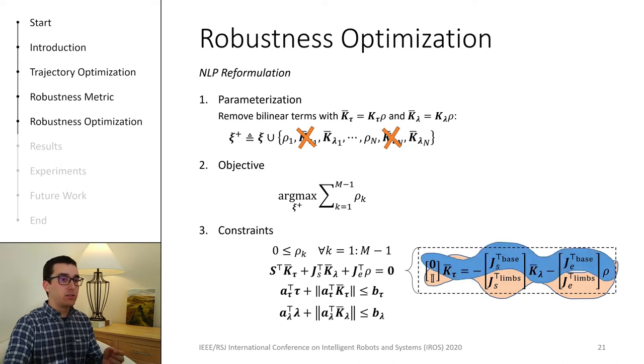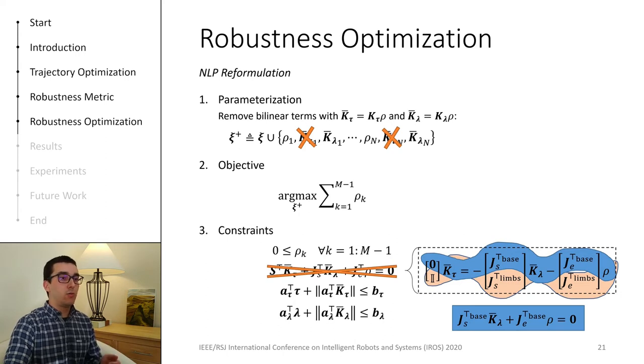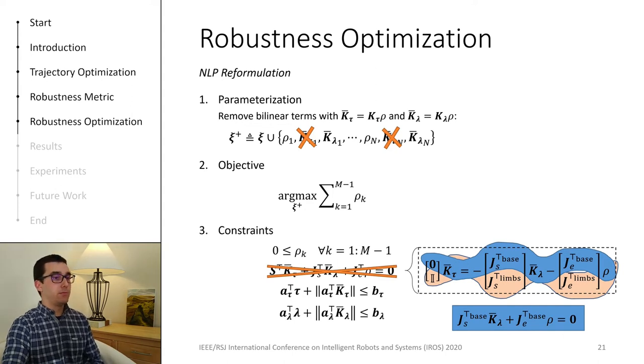However, we still need to enforce the top part of this equality, shown here in blue. But now we no longer need the original constraint. So overall, we decrease both the number of decision variables and the complexity of this equality constraint. This is the final version of the optimization problem in our work, and it is now in a form that is tractable for off-the-shelf nonlinear solvers.